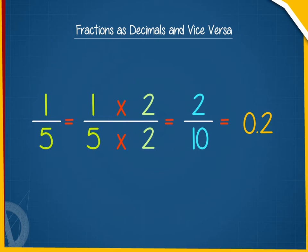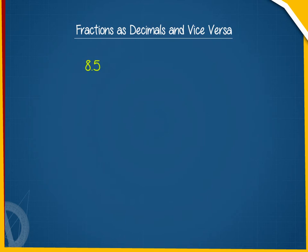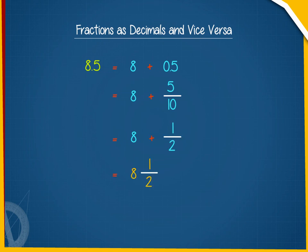We can also convert a decimal into a fraction. For example, 8.5 = 8 + 0.5 = 8 + 5/10 = 8 + 1/2 = 8 and 1/2.